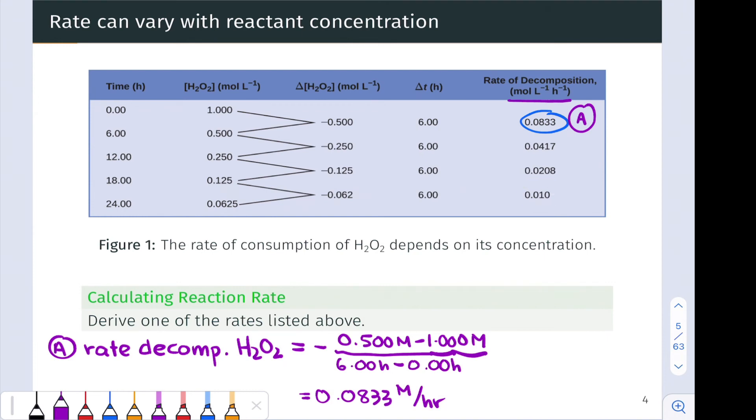We can do the same for this second rate expression in the table using an extremely analogous approach. We're going to use the idea that the rate of decomposition is the negative of the change in concentration divided by the change in time. The change in time is still six hours, since in going from the initial time point to the final time point, the delta, or change, is six hours.